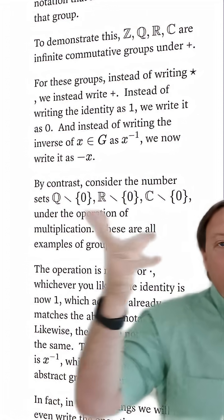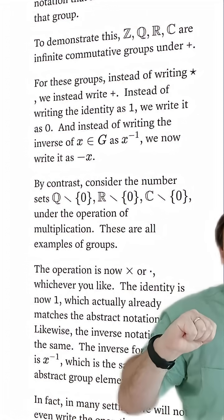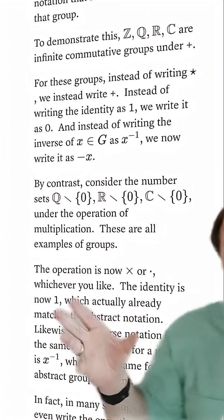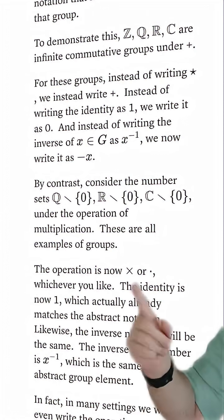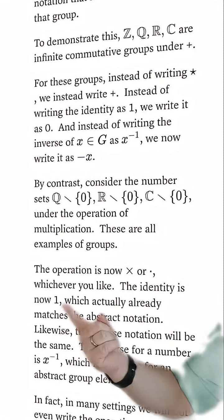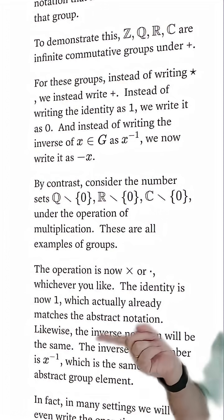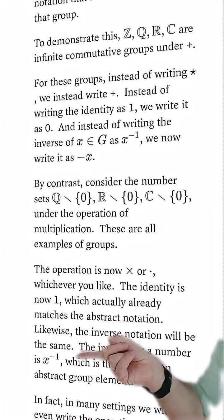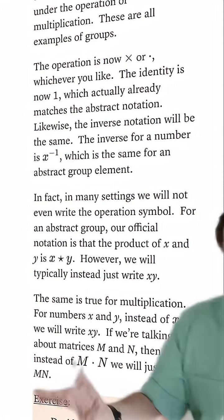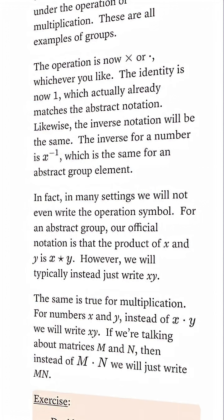But when you remove the number zero from any of these number sets, now multiplication becomes a group, and we can write the symbol like this. Again, we go back to the identity being written as one. We use standard multiplication inverse notation, or we even just simply use concatenation to write multiplication.